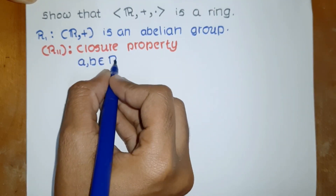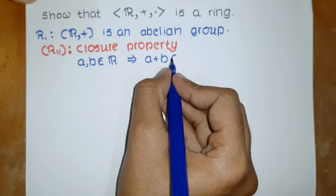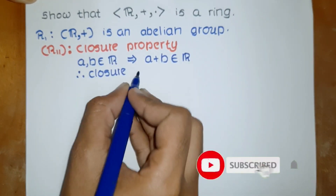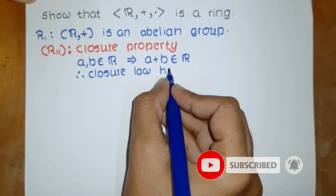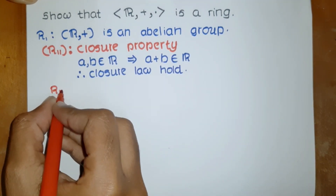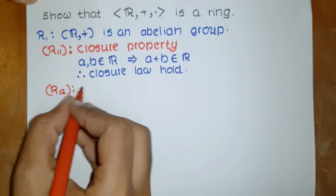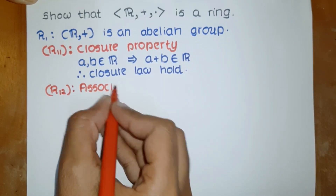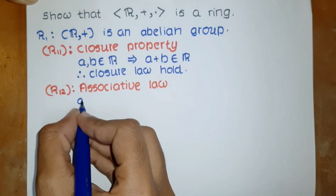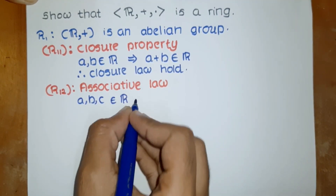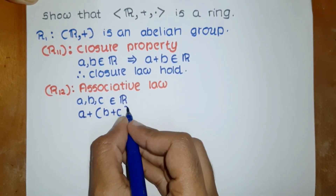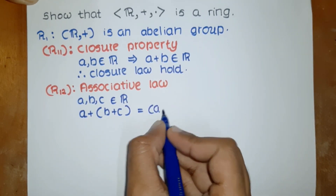If a and b are elements of R, then a plus b belongs to R — that means R is closed under addition. Closure property holds, meaning this operation is a binary operation. The second axiom is the associative law: if a, b, and c are elements of R, then (a plus b) plus c equals a plus (b plus c).